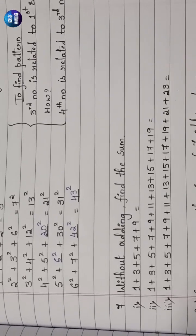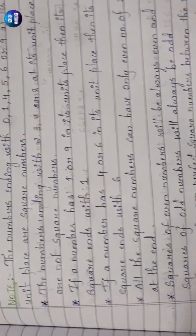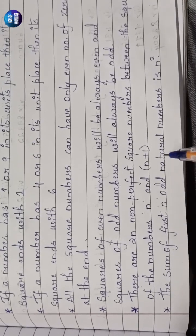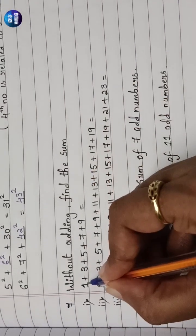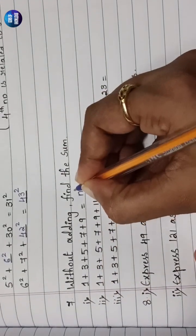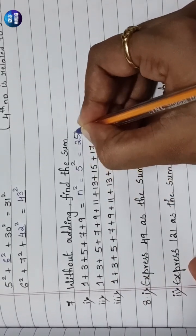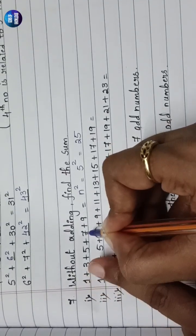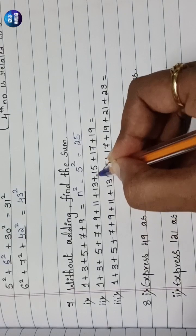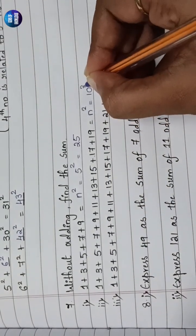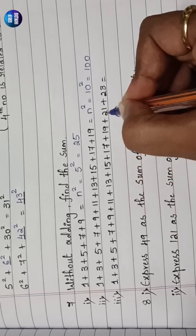Question 7: Without adding, find the sum. Using the formula: the sum of the first n odd natural numbers equals n². For the first part, there are 5 numbers given, so the sum = 5² = 25. For the second part, 10 odd numbers are given, so sum = 10² = 100. For the third, 12 numbers are given, so sum = 12² = 144.